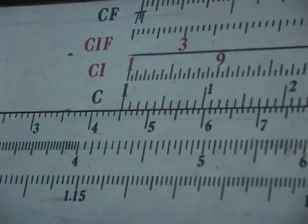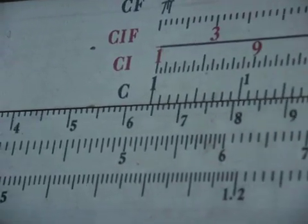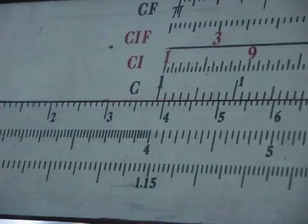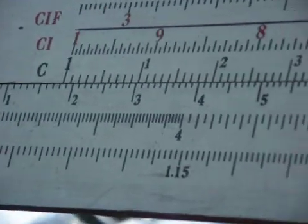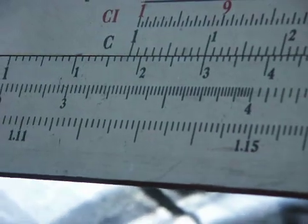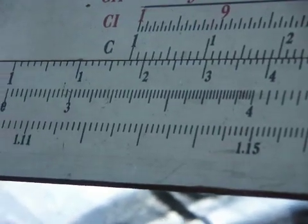So now we have 11.75, and you come over here to pi and come down here, and you have 31, 2, 3, 4, 5, 6, smidgen short of 37. We'll just keep it there.